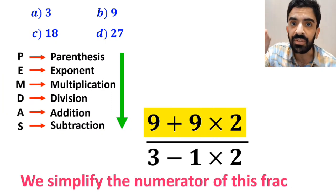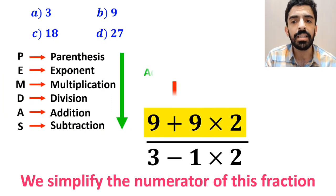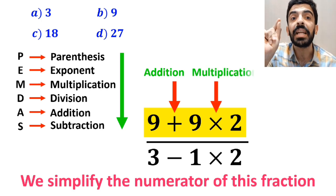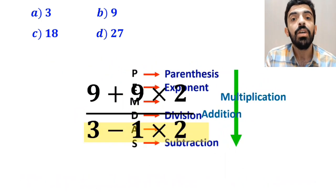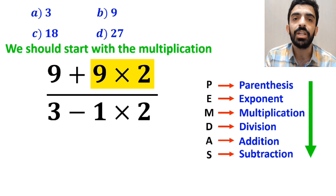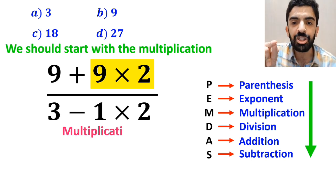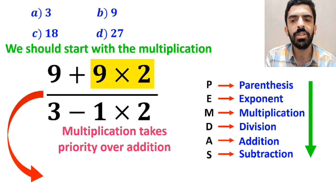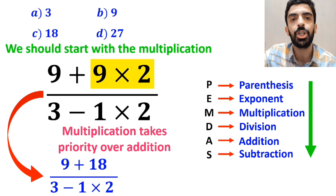Okay, first we simplify the numerator of this fraction. As you can see on the screen, in the numerator, we have an addition sign followed by a multiplication sign. We should start with the multiplication between 9 and 2 because according to the PEMDAS rule, multiplication takes priority over addition. So, instead of the original expression, we can write 9 plus 18 over 3 minus 1 times 2.